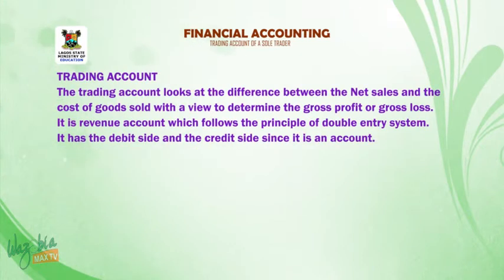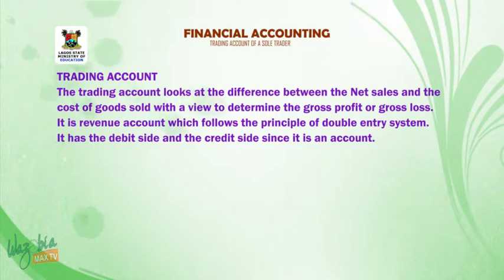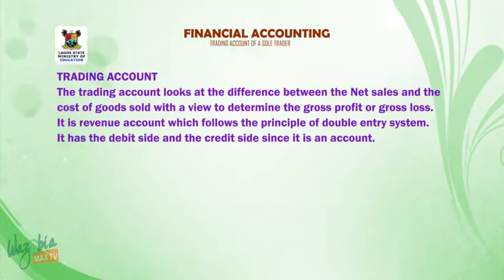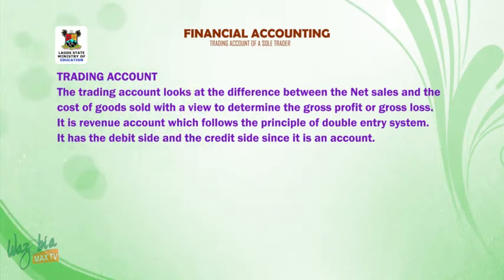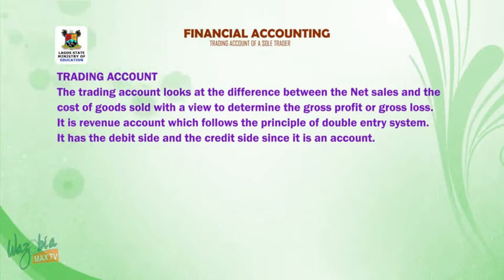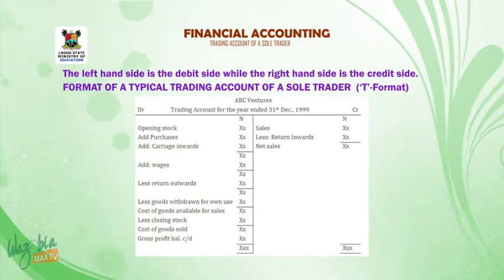Trading accounts looks at the difference between the net sales and the cost of goods sold with a view to determine the gross profit or gross loss. It is a revenue account which follows the principle of double entry system. It has the debit side and the credit side — the left hand side is the debit side while the right hand side is the credit side.